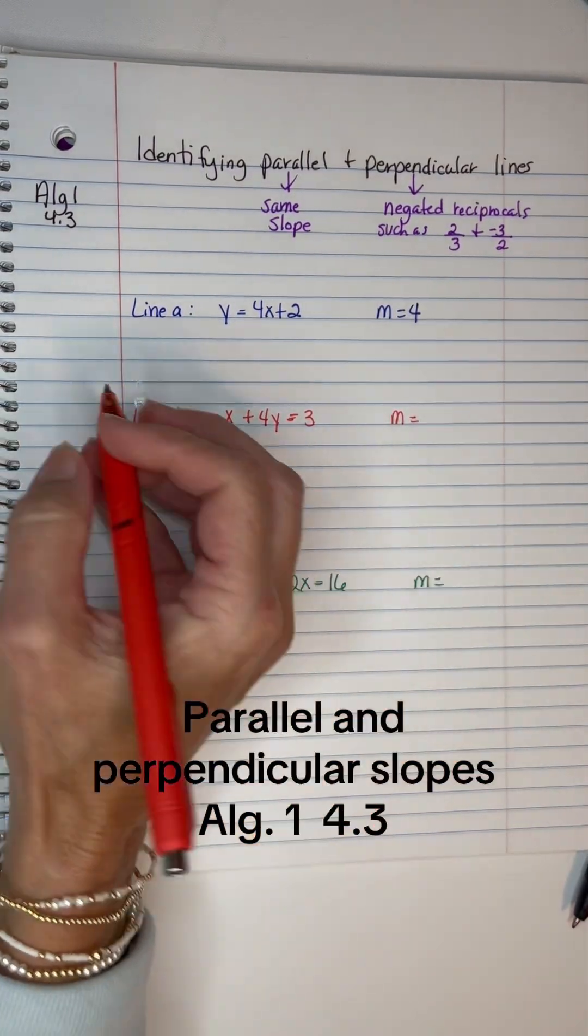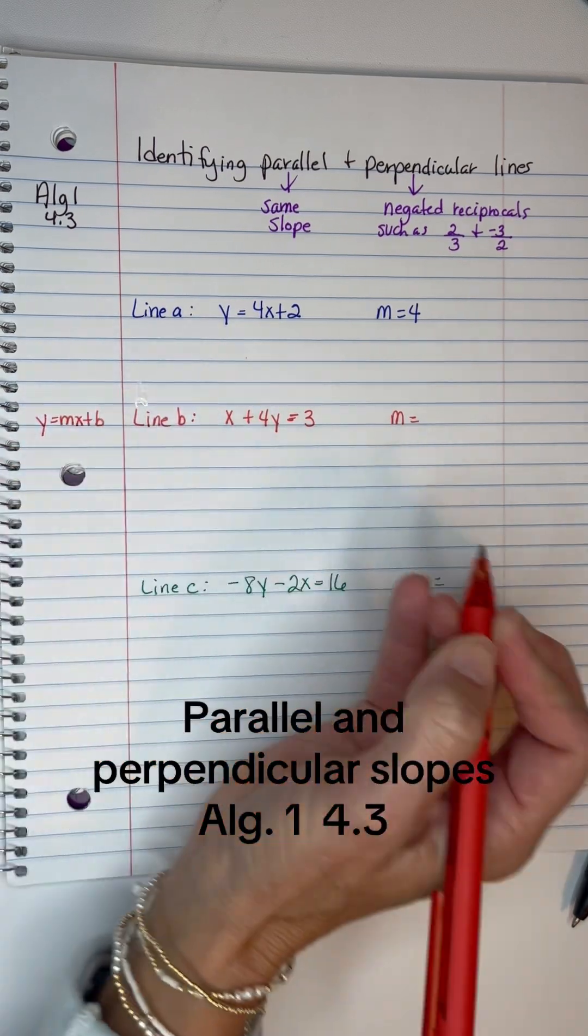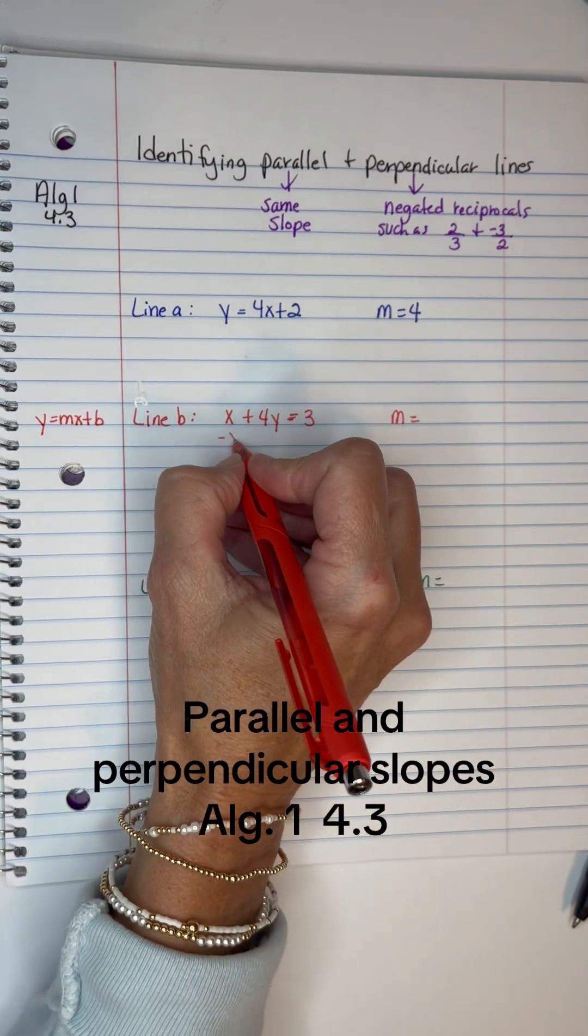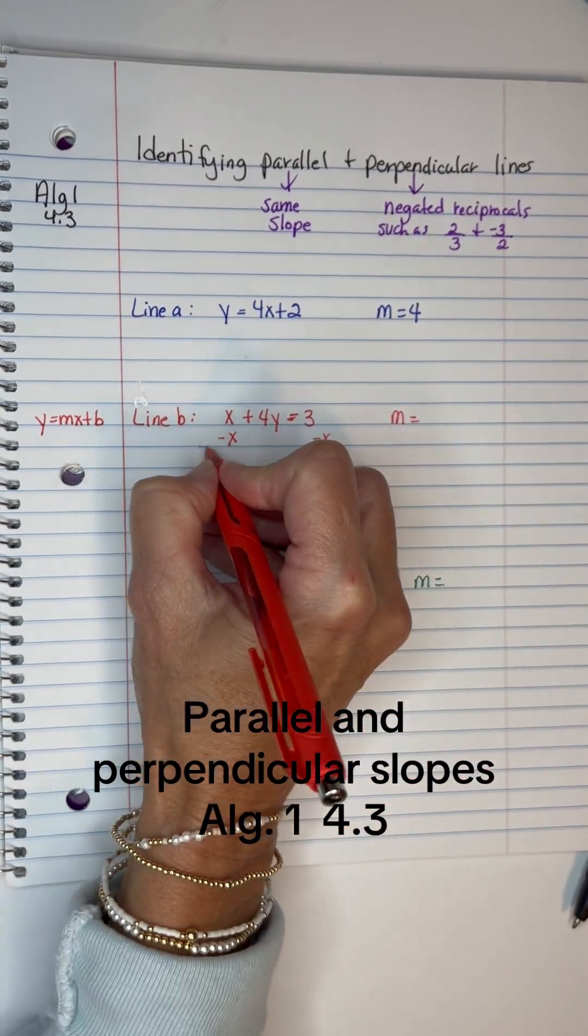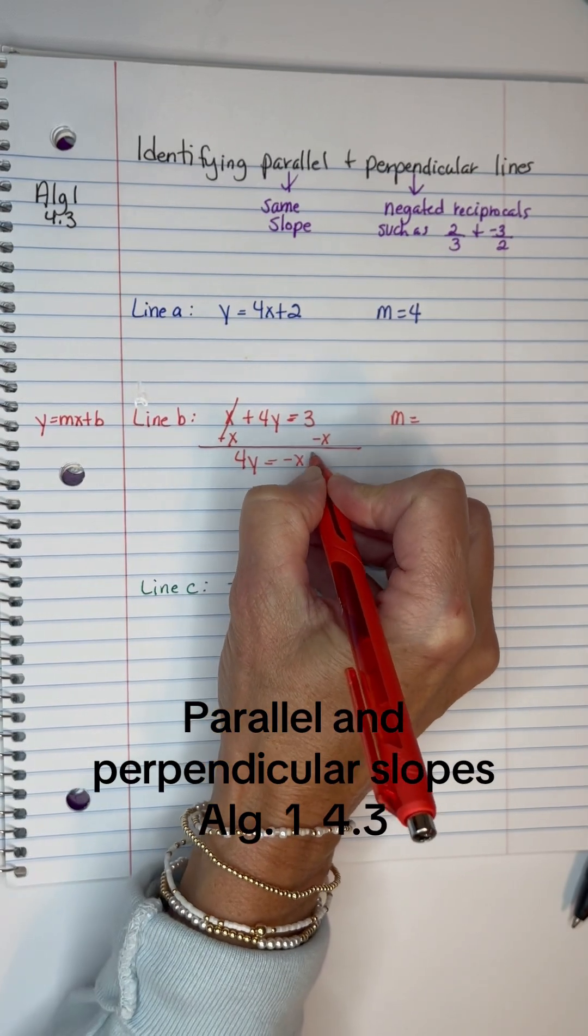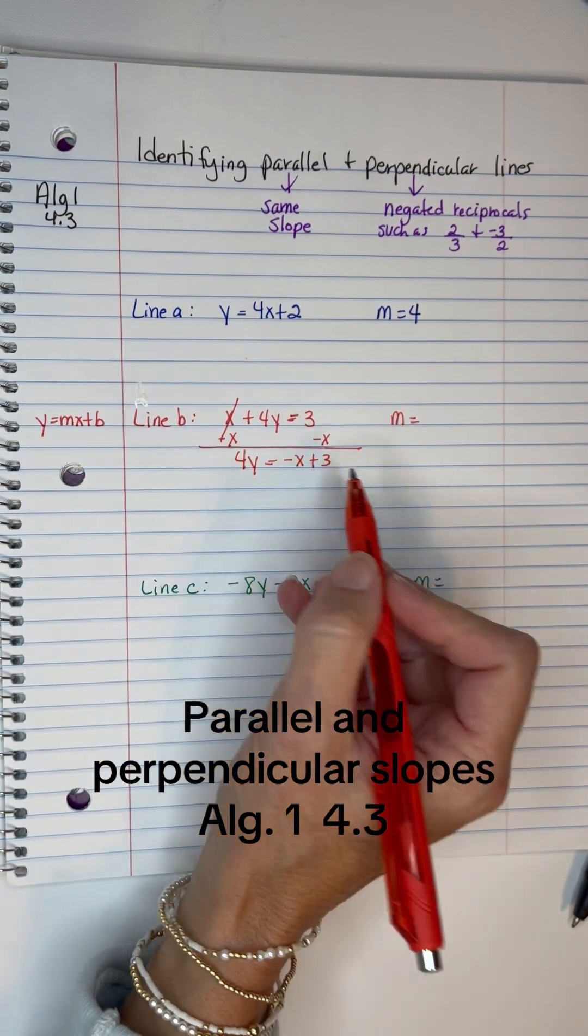On this one, it is not in the proper form. I need it to look like y = mx + b. So since the x is on the left side and it needs to be on the right side, let's subtract x from both sides. We have 4y = -x + 3. Remember, you want the x in front and the constant 3 at the back.